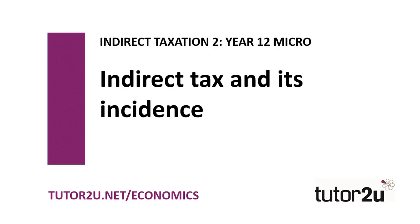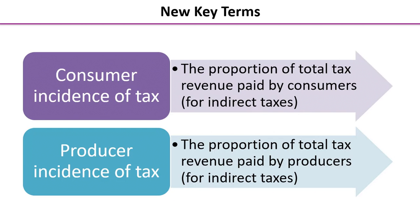We are on to activity three now in our second online lesson for indirect tax in our year 12 micro course. In this one we're going to be developing our knowledge of how indirect taxes work, looking at tax revenue in more detail and splitting that down into its component parts — what we call the incidence — so we're going to be looking at the incidence of tax on consumers and the incidence or burden of tax on producers.